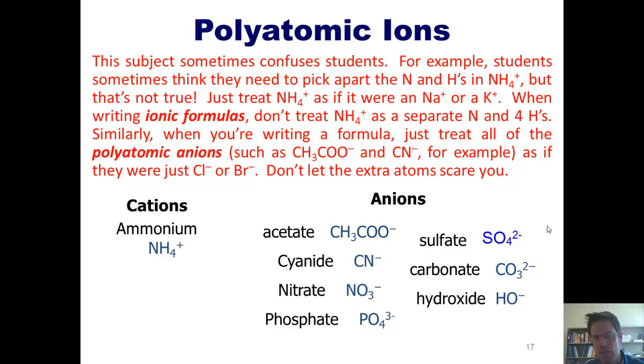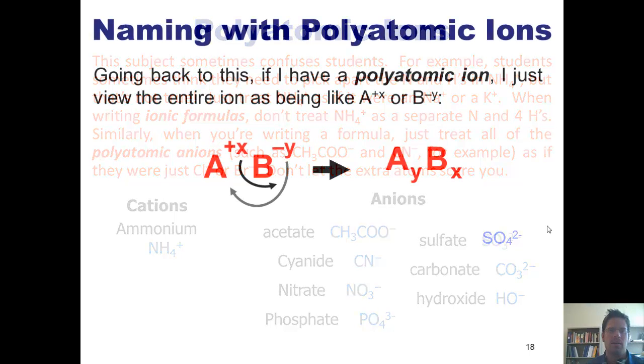Students sometimes think that they need to pick apart the nitrogen and the hydrogens in NH4+, but that's just not true. When you're making a formula using a polyatomic ion, just treat the NH4+ as if it were an Na+ or a K+. Don't treat the NH4+ as a separate N and four H's that you all have to deal with. Similarly, when you're writing a formula, just treat all the polyatomic anions, such as acetate or cyanide, as if they were just a Cl- or a Br-. Don't let the extra atoms scare you.